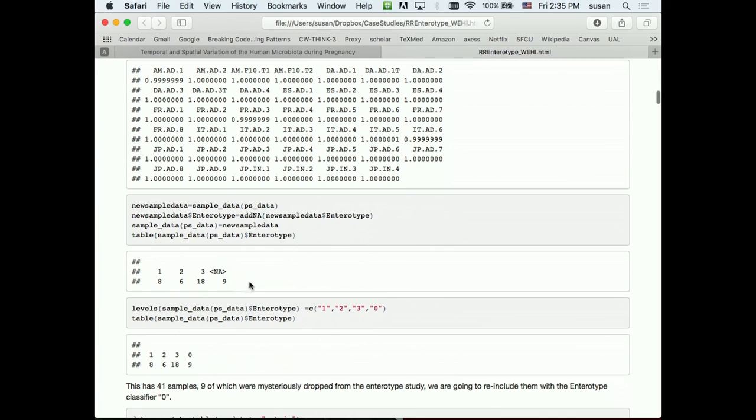And then we see that the labels for the type here, for instance, we have nine missing. This means in fact that the people who analyzed the data when they were doing the clustering, they decided to drop nine out of the 41, 42 samples.